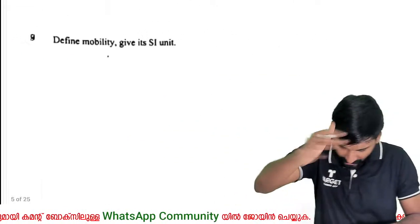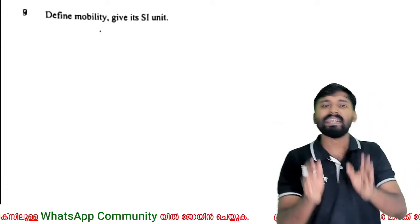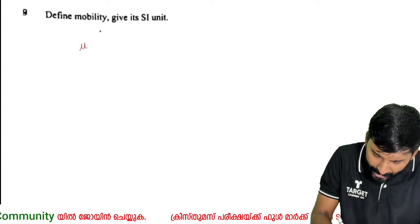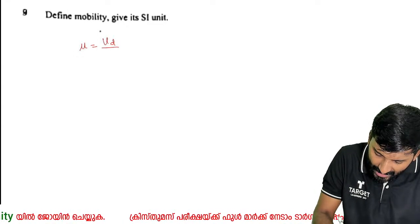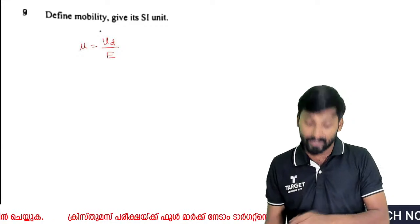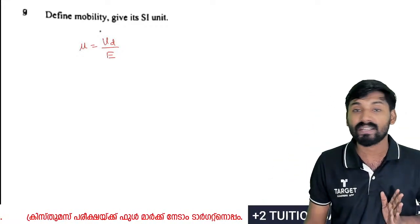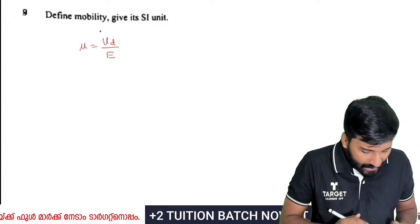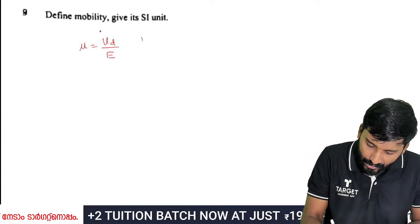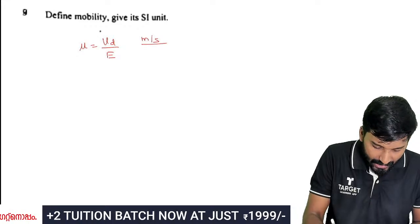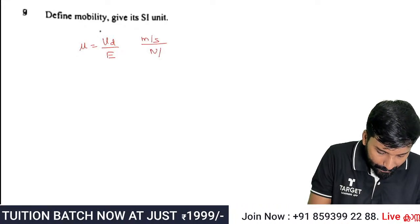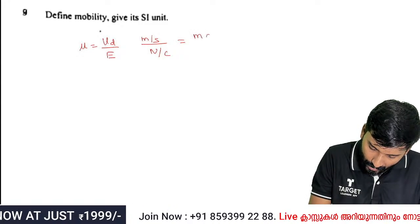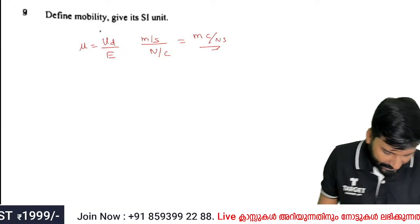Define mobility in the current electricity chapter. Mobility is the ratio between drift velocity and the intensity of the electric field. It is the drift velocity gained by electrons when an electric field is applied. The units are meter squared per volt-second, or equivalently meter coulomb per newton-second.